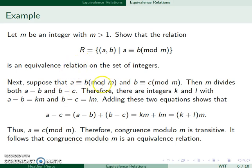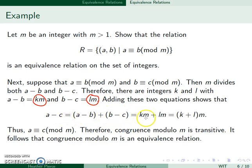Now suppose A is equivalent to B and B is equivalent to C mod M. Then M divides A minus B and B minus C, so there exist integers K and L such that A minus B equals KM and B minus C equals LM. Then A minus C equals (A minus B) plus (B minus C), which equals KM plus LM, and factoring out M gives (K plus L) times M. So A is equivalent to C, and congruence modulo M is an equivalence relation.